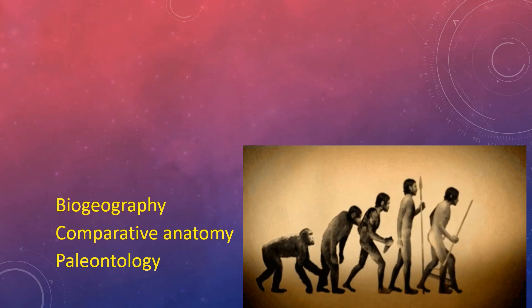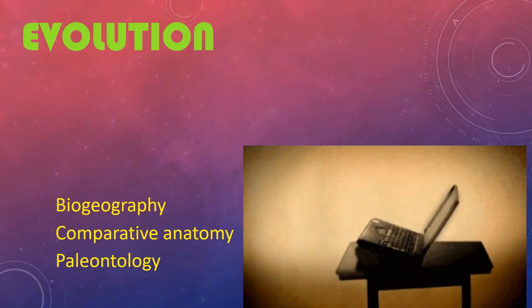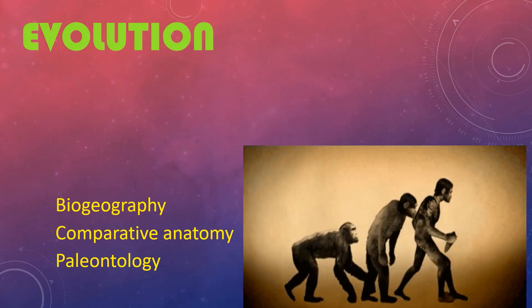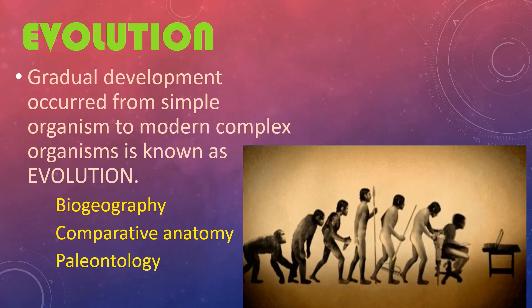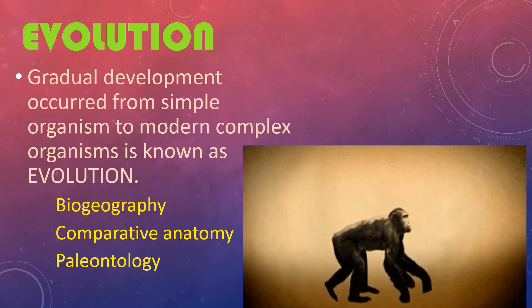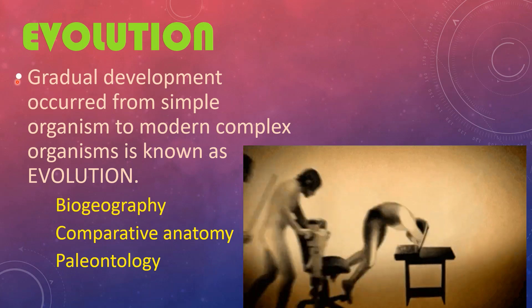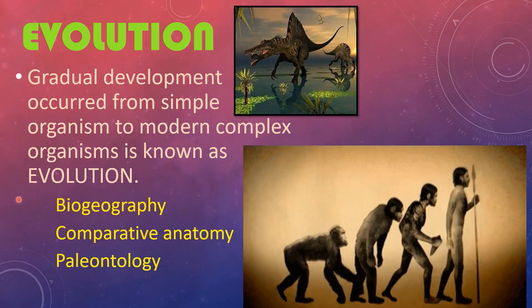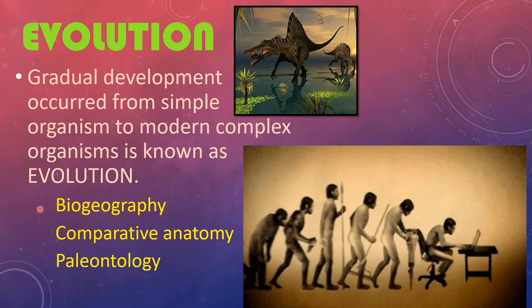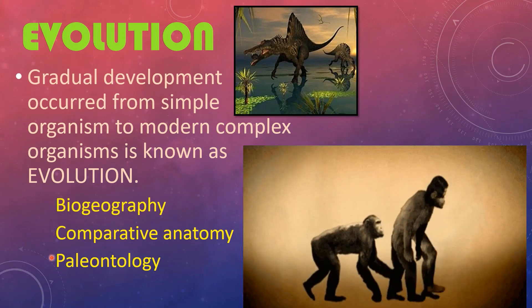Now we see the definition of evolution. Gradual development occurred from simple organisms to modern complex organisms is known as evolution. Evidences for conclusions of evolution are biogeography, comparative anatomy, and paleontological fossil study.